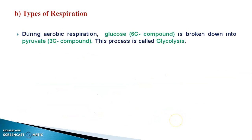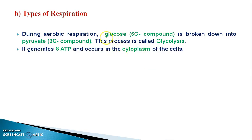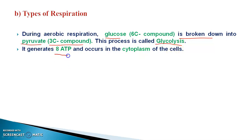During this aerobic reaction, during the complete oxidation of the organic food material, the most important role is played by glucose. Glucose is a 6-carbon compound. This 6-carbon compound glucose breaks down into pyruvate, which is a 3-carbon compound. The conversion of glucose into pyruvate is known as glycolysis, and this glycolysis generates 8 packets of energy — 8 ATP. This conversion occurs totally in the cytoplasm of the cell.